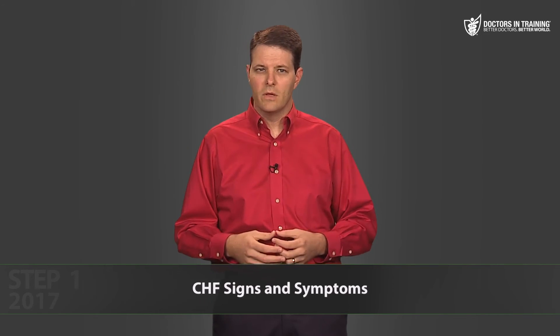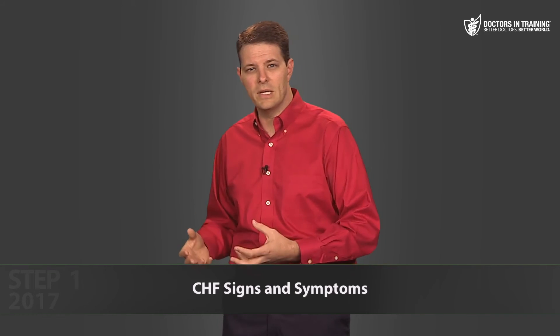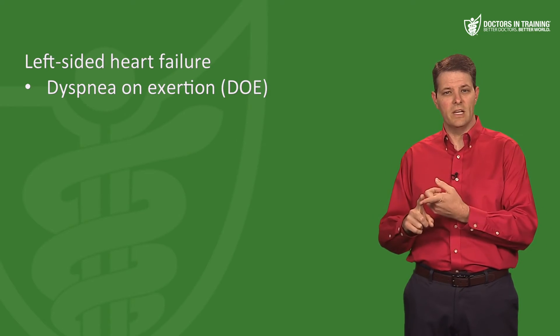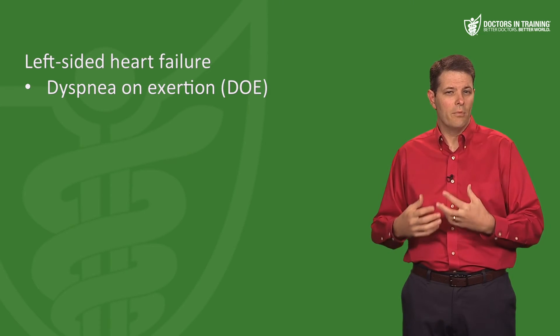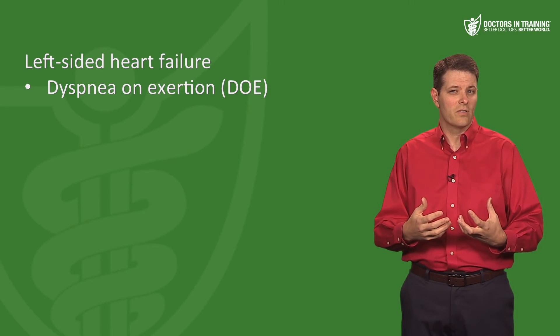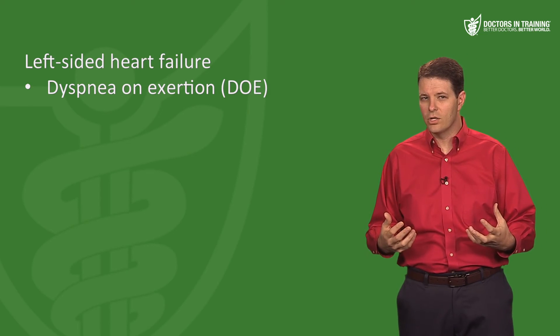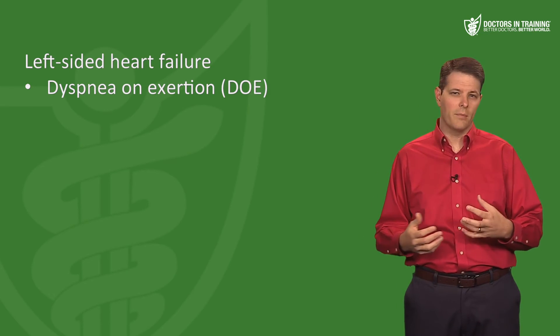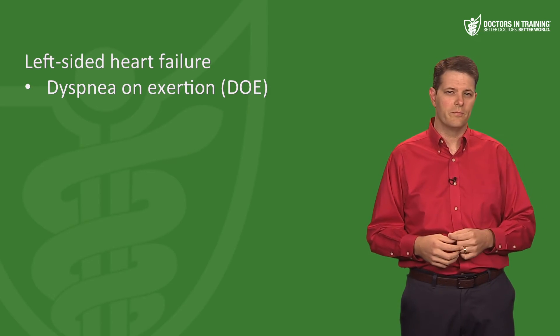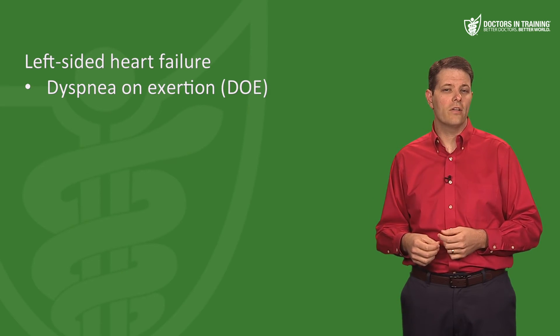There are two broad categories of CHF symptoms corresponding to two types of heart failure. Left-sided heart failure causes pulmonary edema, crackles, and dyspnea. Right-sided heart failure causes peripheral symptoms like peripheral edema and JVD. Left-sided failure causes dyspnea on exertion (DOE) because the left ventricle output fails to increase during exercise, backing fluid up into the pulmonary vasculature.